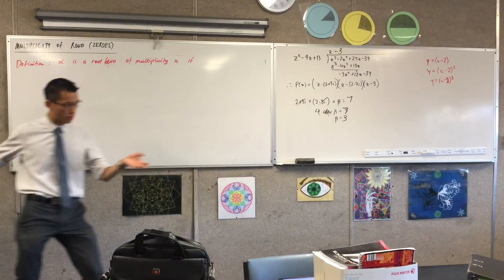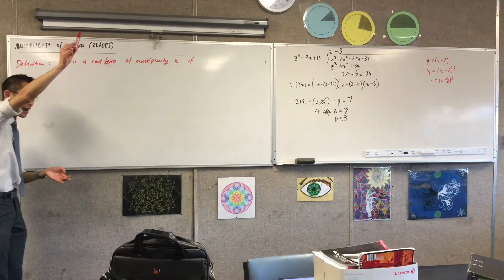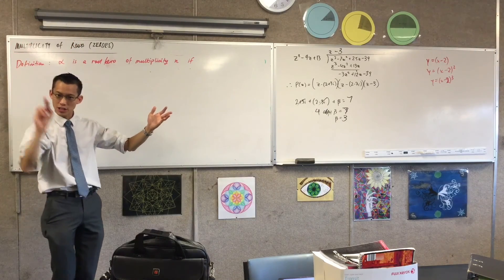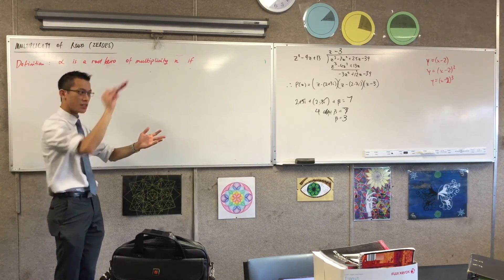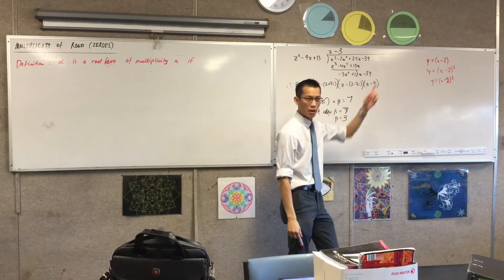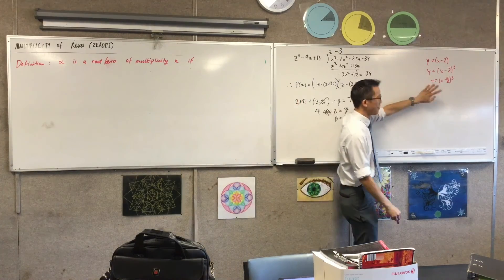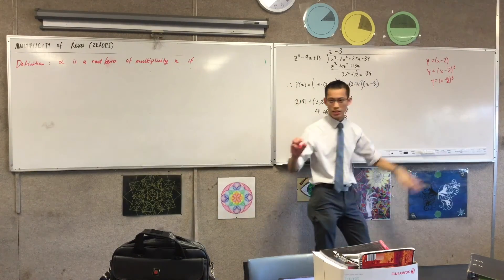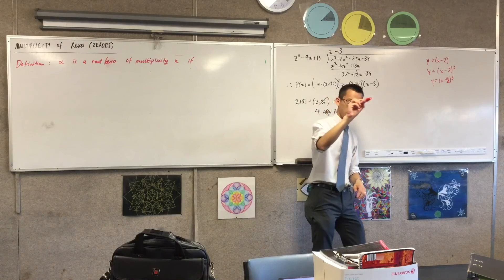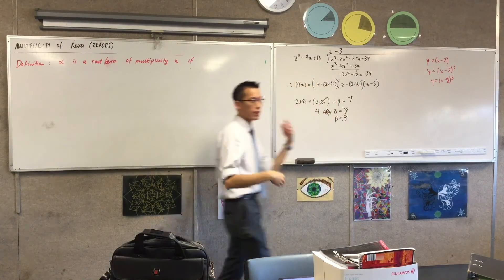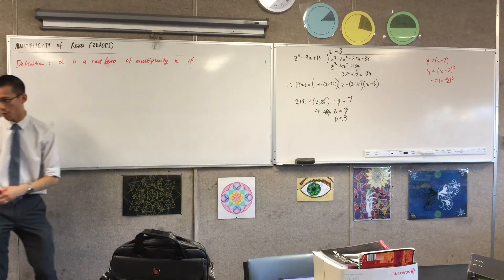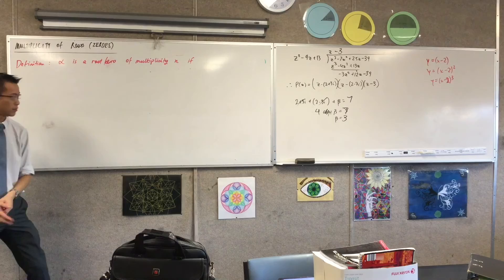A single root just cuts straight through the axis. A double root sort of touches and then turns around. And then a triple root — we know it's going to come up, pause, and then stop. And then we get out the language from last year of stationary points and points of inflection.